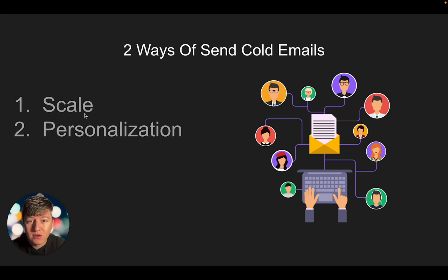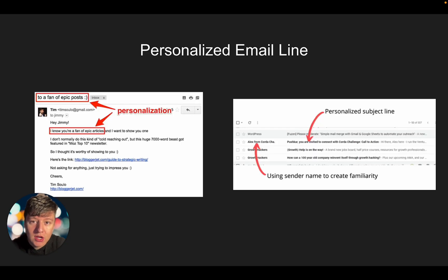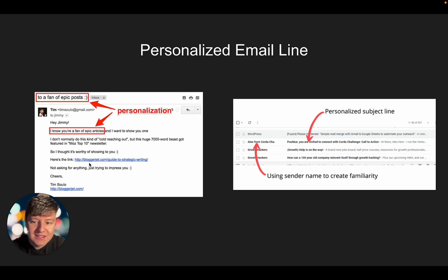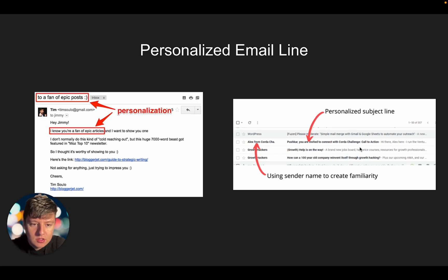We don't have to personally write each and every email ourselves because we can use AI. Before I show you how to set everything up, I just want to make sure you know what I'm talking about. The first line of the email is what we want to be personalized. Then the rest of the email, we can just copy and paste the same email we're sending to everyone else. Before they open the email, they're going to see that first personalized line. So now I'm going to show you how to do this.